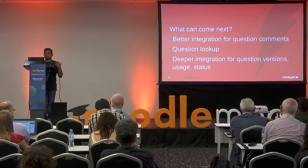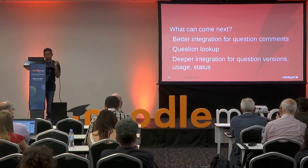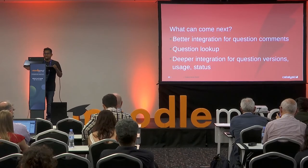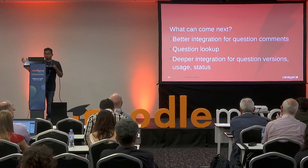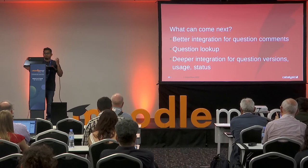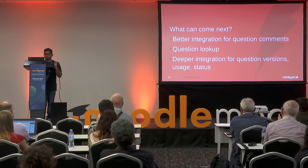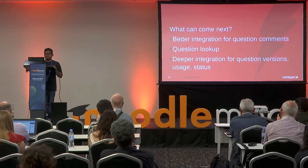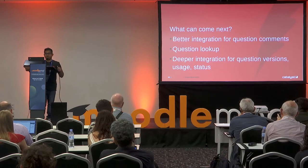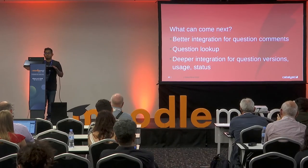For example, if you have a new version created and you want some external actions to be done, we can do a question lookup very easily, add it to the plugin, and it can grab the question ID, all the information, the version number, the entry number — so it can trigger anything you want. And we can have a very good space for deeper integration with question usage and status, because questions have a status at the moment. So if someone makes your ready question a draft, you might need to get notified or do some actions according to your preference for your question bank.